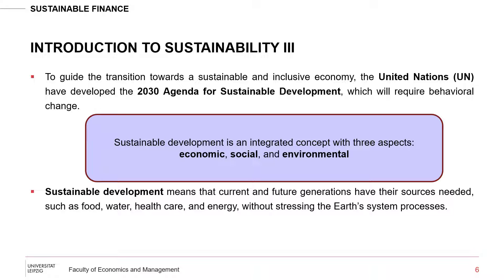To guide this transition towards a sustainable and inclusive economy, the United Nations developed the 2030 Agenda for Sustainable Development, which will require behavioral change. Sustainable development is an integrated concept with three aspects: economic, social, and environmental. Sustainable development means that current and future generations have the resources they need — such as food, water, healthcare, and energy — without stressing system processes. So it's not just about climate change; sustainable development is about sustainability in all aspects of the economy, including social aspects and governance issues like worker health and worker safety.